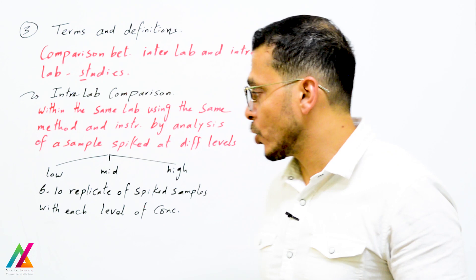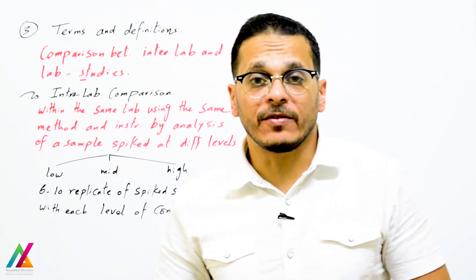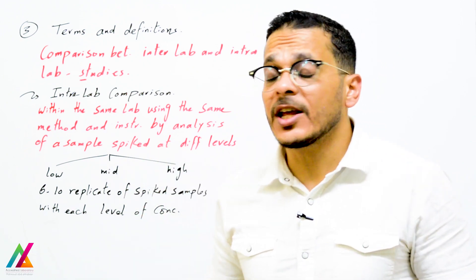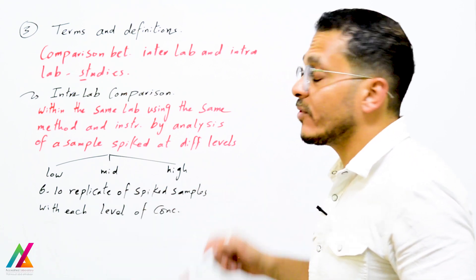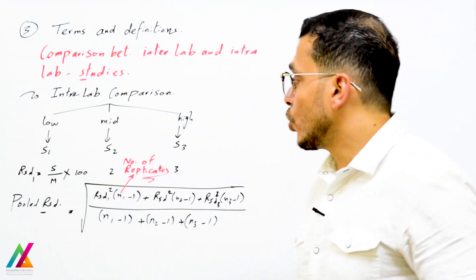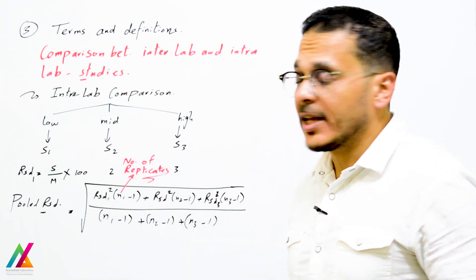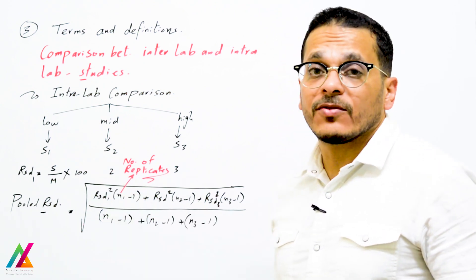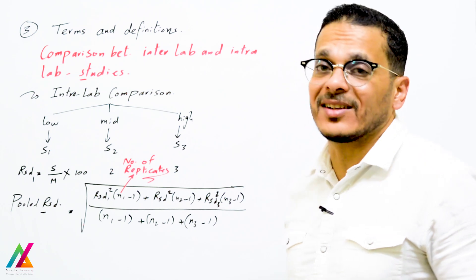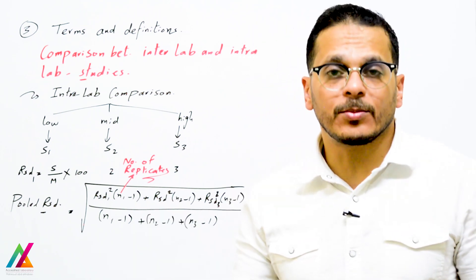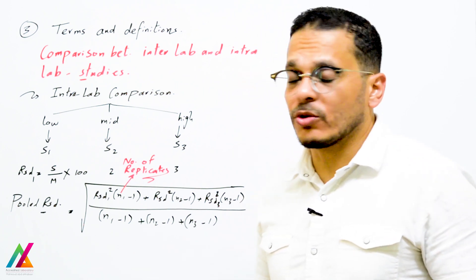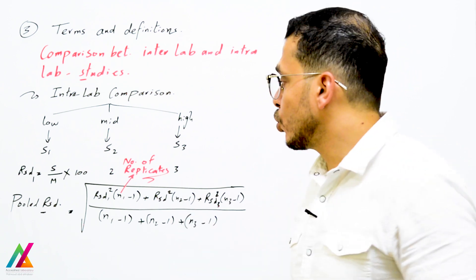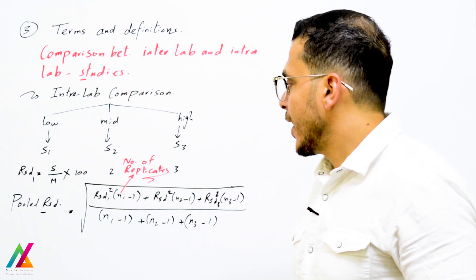For each concentration level, you run 6 to 10 replicates according to your ranking line. Then you calculate the standard deviation for each level, and the relative standard deviation (RSD) for each level, which equals standard deviation divided by the average for that level, multiplied by 100. The RSD should be within an acceptable range — for example, less than or equal to 20% as in the AOAC guideline — to ensure the performance of the method.